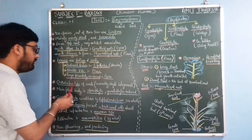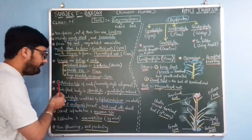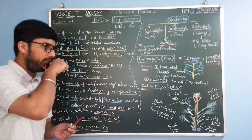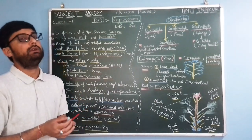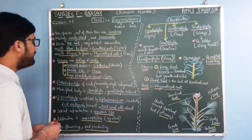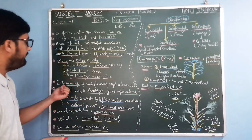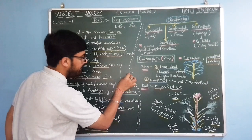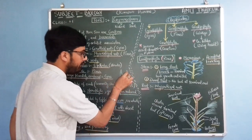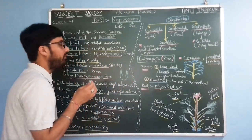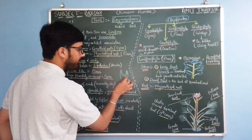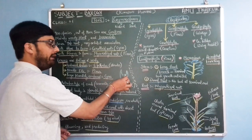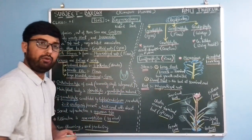The ovule in gymnosperms is of the orthotropous type — meaning it is upright. Gymnosperms have only a single integument around the ovule, whereas angiosperms have two integuments. Inside this single integument, eggs are developed. In angiosperms, the ovule is of the anatropous type.